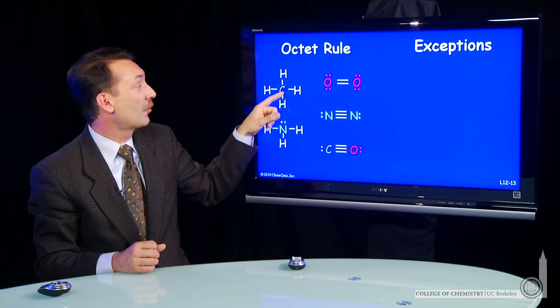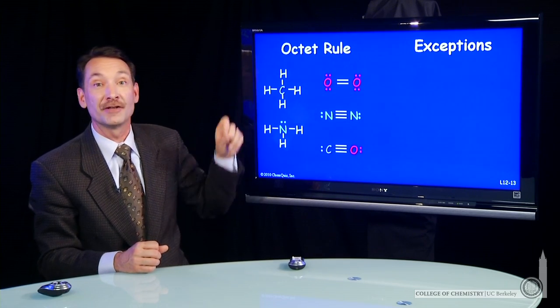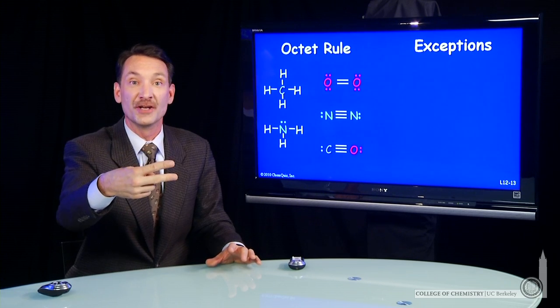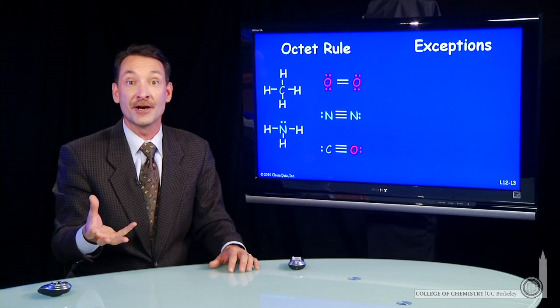So carbon has two, four, six, eight electrons around it. Each hydrogen has a pair of electrons. And a pair is sufficient for hydrogen, because hydrogen only goes up to two. It fills up principal quantum level one, and the maximum number of electrons there is two.